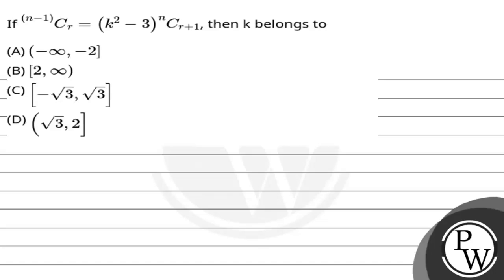Hello, let's read the question. The question says: if n-1Cr is equal to k squared minus 3, to the power nCr+1, then k belongs to — option A: minus infinity to minus 2, option B: 2 to infinity, option C: minus root 3 to root 3, option D: root 3 to 2.